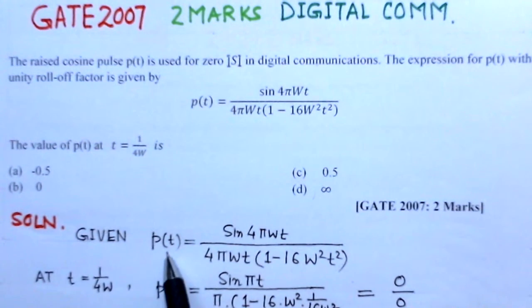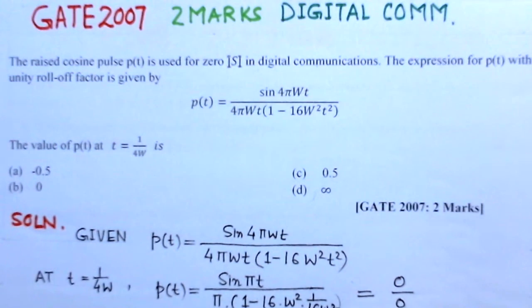Now it is given that P(t) is sin 4πWt over all this. Now at t equals 1 by 4W we have to find this. So we substitute 1 by 4W in this expression. This gives me, if you substitute for t equal to 1 by 4W, it will cancel. It will be sin πt over π into 1 minus 16W² into 1 over 16W² and this bracket is closed.